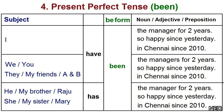In present perfect tense, we use been. Examples: I have been the manager for two years. We have been the managers for two years. He has been the manager for two years.